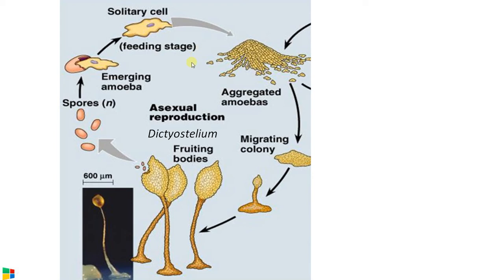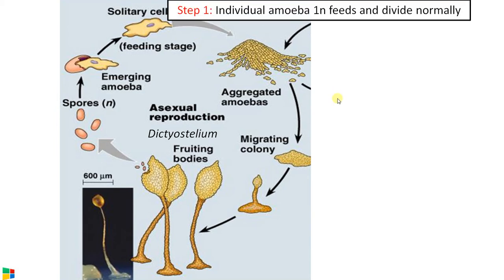Now moving into the life cycle, we have divided this into different steps for better understanding. Step 1: individual amoeboid solitary cells move around, feed, and divide mitotically. This is the normal cell stage. The most common method of reproduction is asexual reproduction.